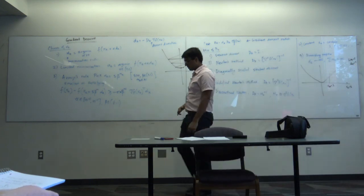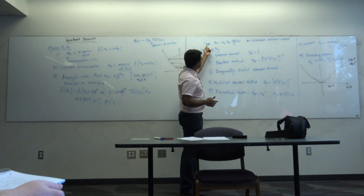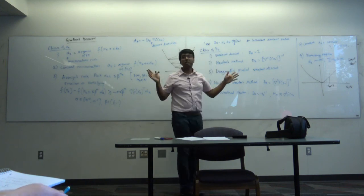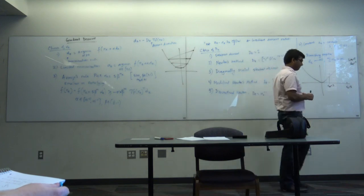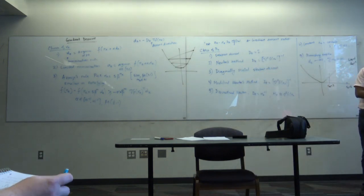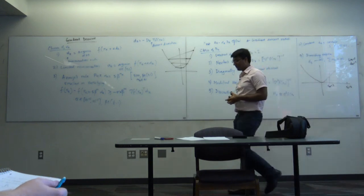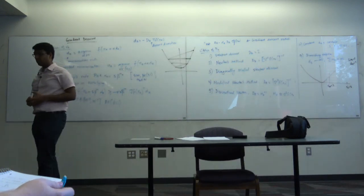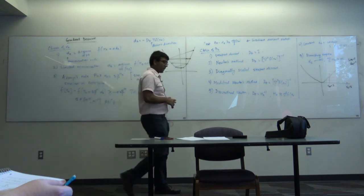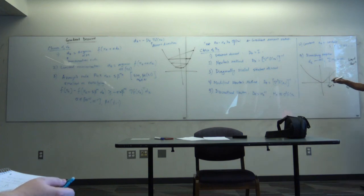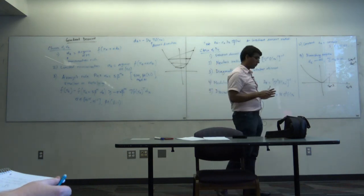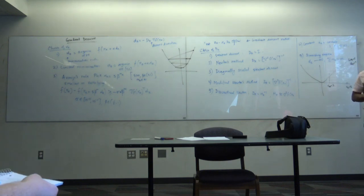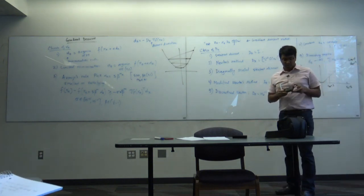To summarize today's class: the gradient descent method guarantees that f(x_{k+1}) is less than f(x_k) as long as alpha_k is small and D_k is positive definite. If the sequence converges to x*, you cannot say anything about x* until you check the second-order sufficient conditions — it's just a stationary point, a candidate for a local minimum. In the next class we will discuss variations of gradient descent algorithms and modifications for specific classes of problems.